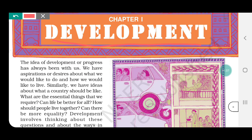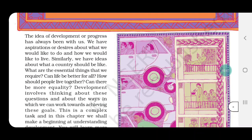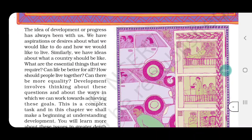So let's start the chapter. The idea of development or progress has always been with us. We have aspirations or desires about what we would like to do and how we would like to live. Similarly, we have ideas about what a country should be like. What are the essential things that we require? Can life be better for all? Development means progress — this idea of progress is always with us.